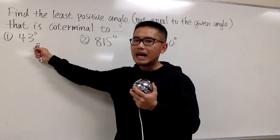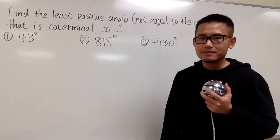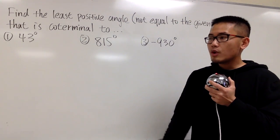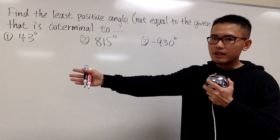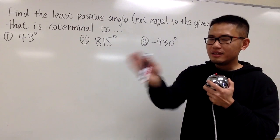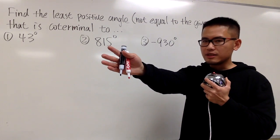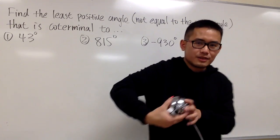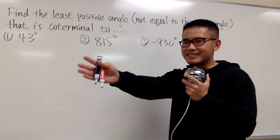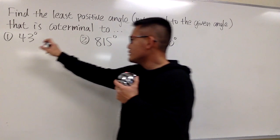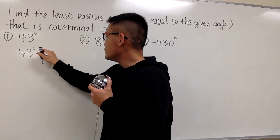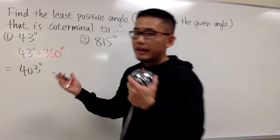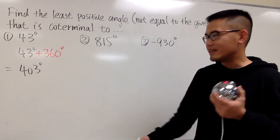Let's look at number one. We have 43 degrees. You can just imagine this — 43 degrees means I'm just going to turn a little bit. I had to find another angle so that when I start from here and turn so many degrees, I will still end up facing the same direction. As long as I can turn another 360 degrees — that's like one loop — I can still be facing the same direction. So I can just do 43 degrees and add 360 degrees, which is going to be 403 degrees. At the end, you'll be facing the same direction. This is the answer.